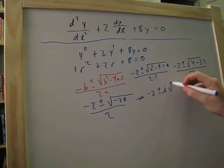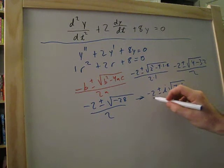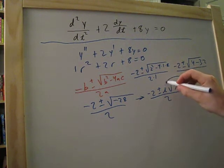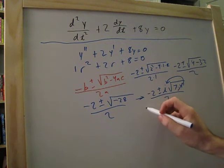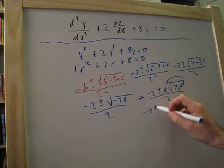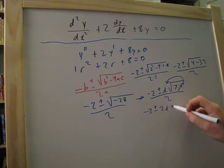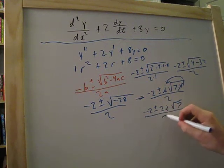And that's going to be i. We'll bring that up front. And that's going to be 7 times 4. So, we can cancel that out and bring that out here. So, that'll be minus 2 plus or minus 2i times the square root of 7. And that's all over 2.